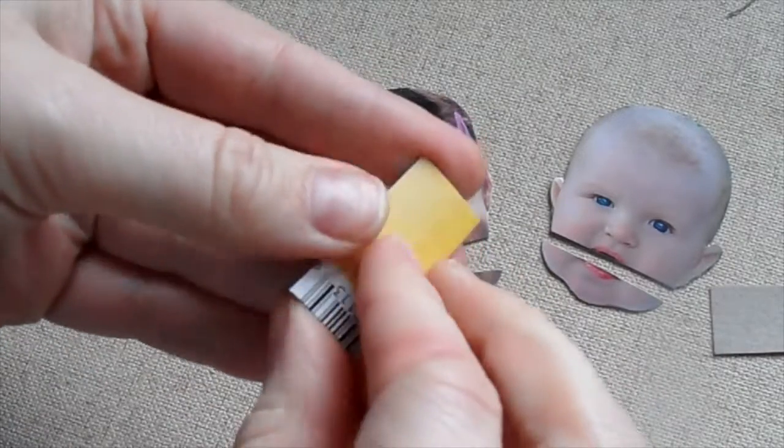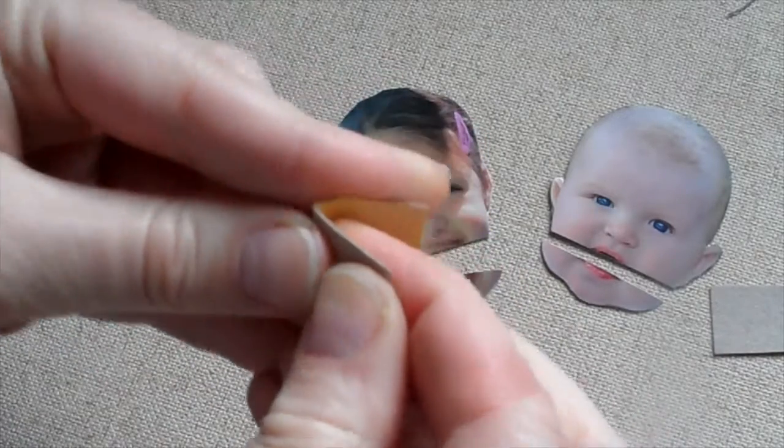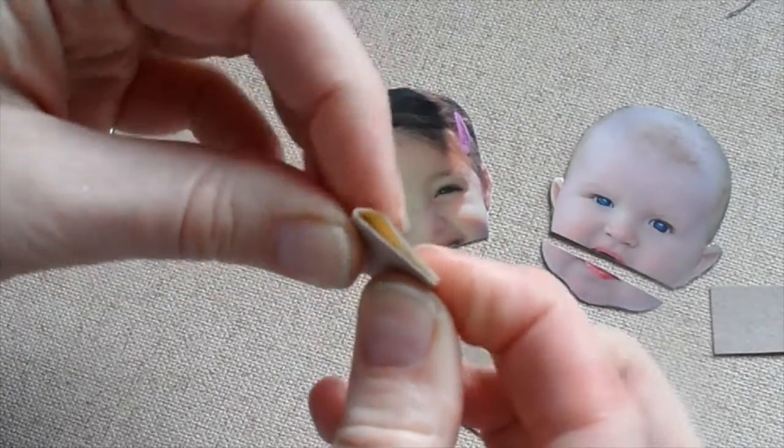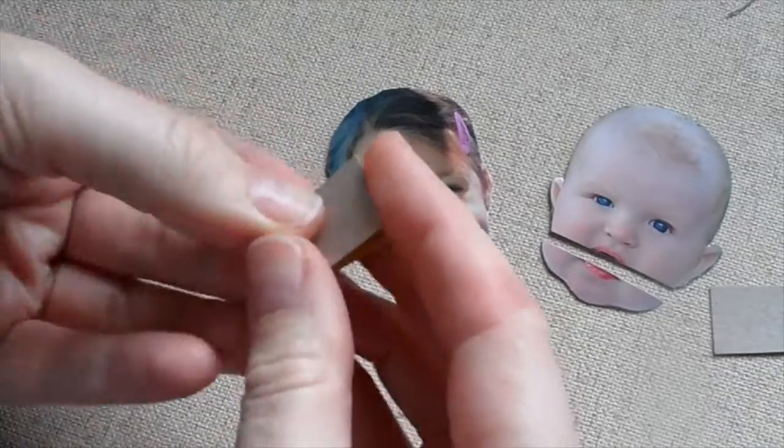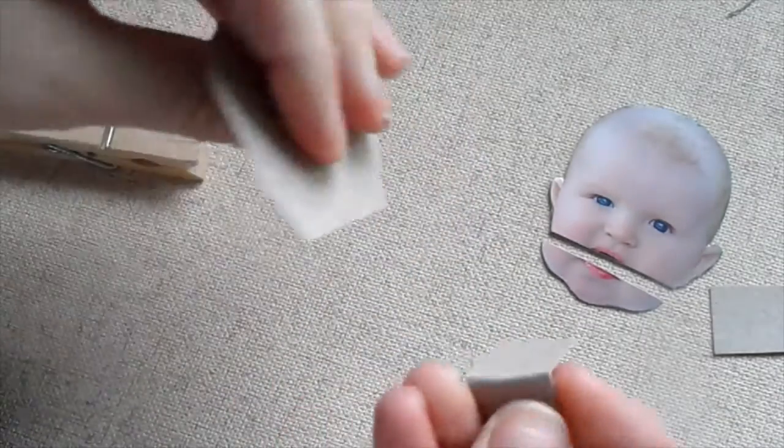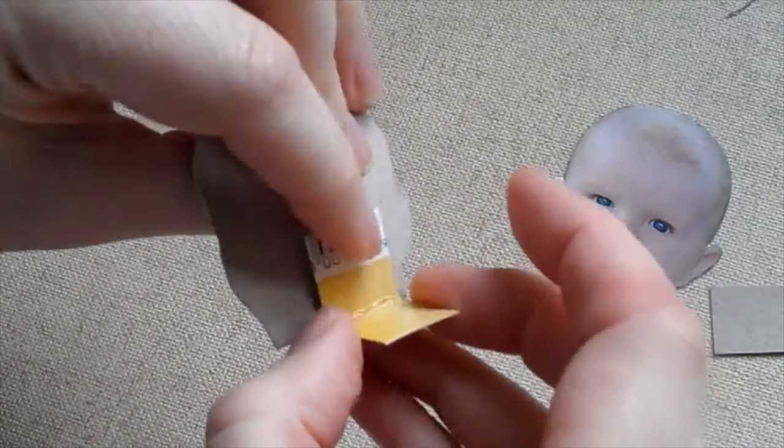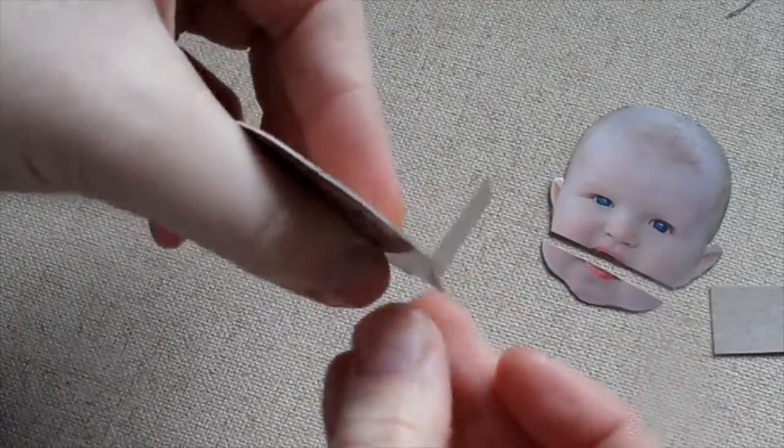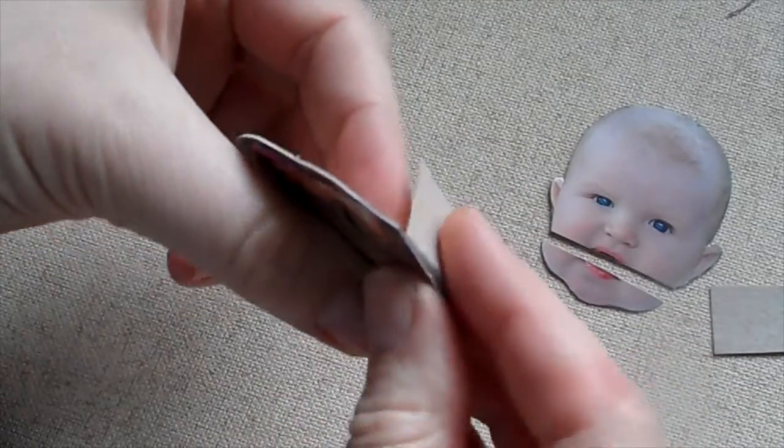Once you fold these sections in half, this is going to be what attaches the photo parts onto the clothespin. So these are going to attach onto the back like so, and then that piece is going to insert into the clothespin. A glue stick or a glue gun will hold it in place.